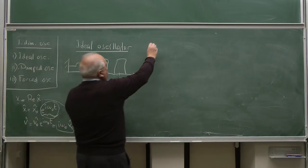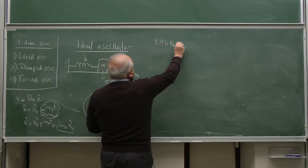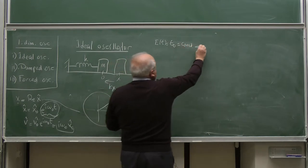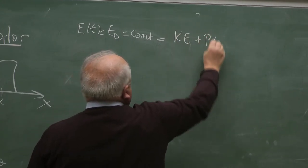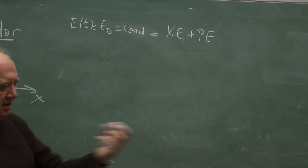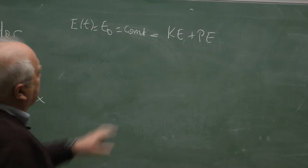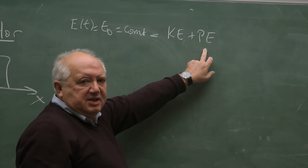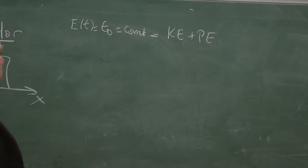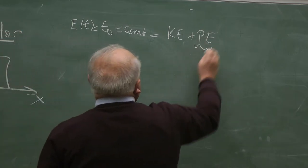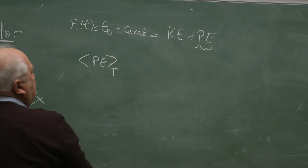There is another question. The energy E(t) = E₀ is constant, and it equals kinetic energy plus potential energy. But since the system is oscillating, sometimes kinetic energy is bigger and sometimes potential energy is bigger — they are not individually constant. We can ask: what are their average values over a period of oscillation T₀ = 2π/ω₀?